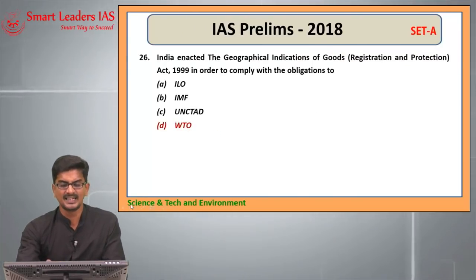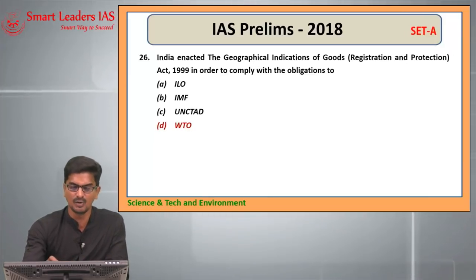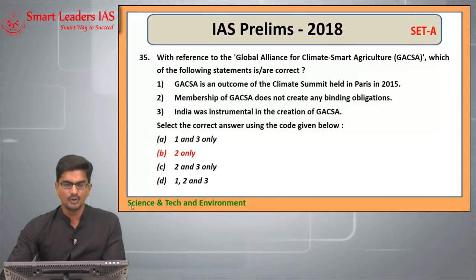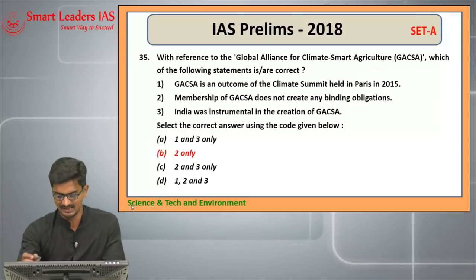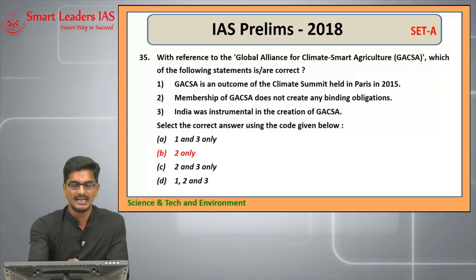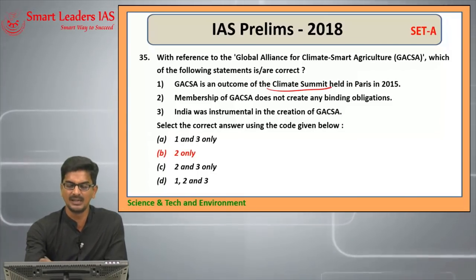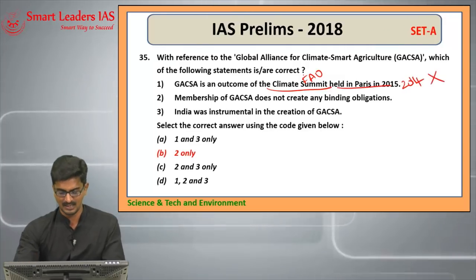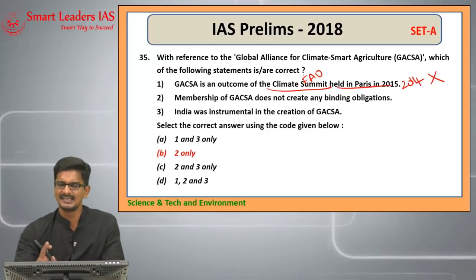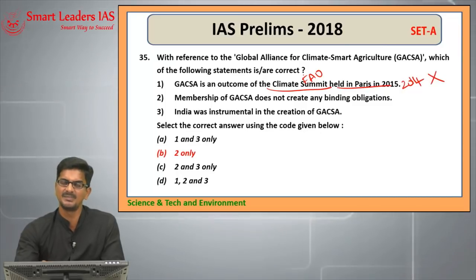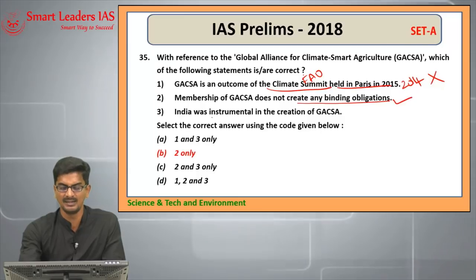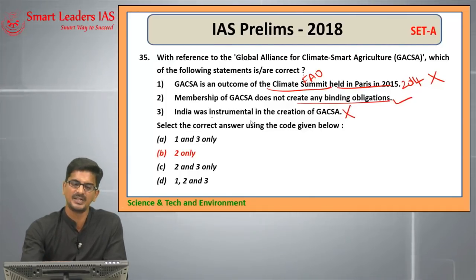Question number 26: India enacted the Geographical Indications of Goods Act 1999 to comply with obligations under TRIPS, which comes under the WTO framework. Answer: D. Question number 35: Regarding the Global Alliance for Climate Smart Agriculture (GACSA) — it was not an outcome of the Climate Summit but was established by the Food and Agriculture Organization in 2014. That first statement is wrong. Membership of GACSA does not create binding obligations as it is a voluntary farmer-led coalition — second statement is correct. India was not instrumental in its creation and is not even a member. Answer: two only.